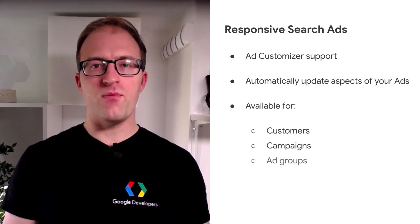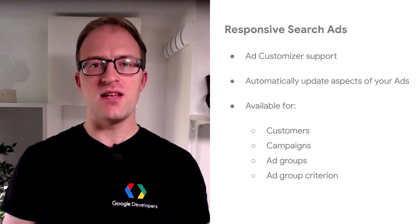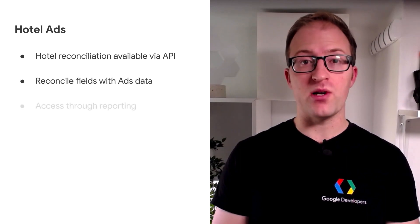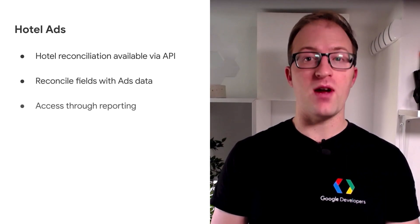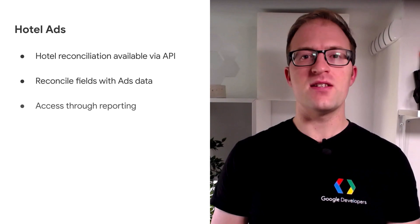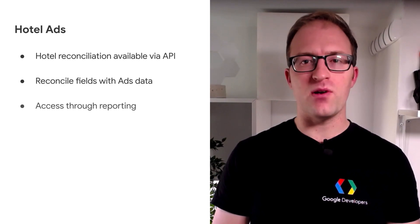If you use hotel ads, you can now access hotel reconciliation information via the Google Ads API. This includes conversion information associated with hotel bookings which can be reconciled with data from ads. See the fields available in the reporting section of our developer site.